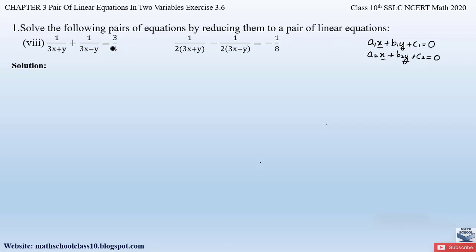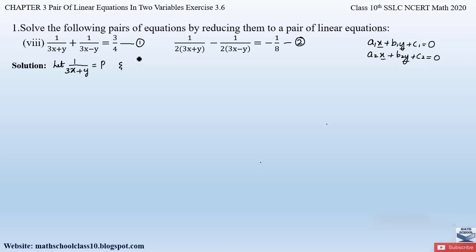This question is very similar to the previous part 7 from the same question. The only difference is that here even the coefficients are in the denominator. In both equations we have 1/(3x+y) and 1/(3x−y) as the variable terms. So let us substitute 1/(3x+y) = p and 1/(3x−y) = q, and then reduce them to the general form of linear equations. Let the given equations be equation 1 and equation 2.